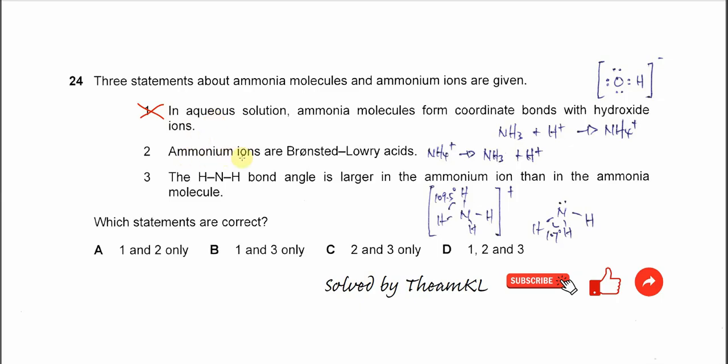Second statement: ammonium ions are Brønsted-Lowry acids. So this is true. Ammonium can of course donate the hydrogen ion to form back this ammonia.